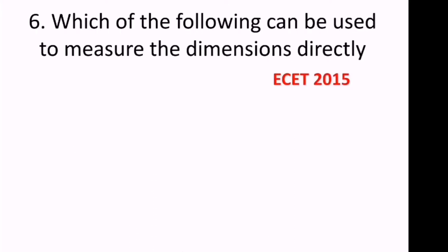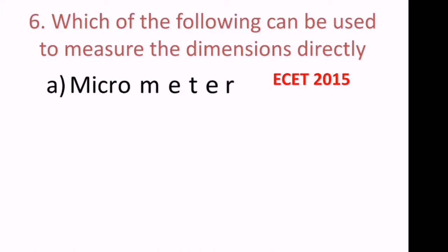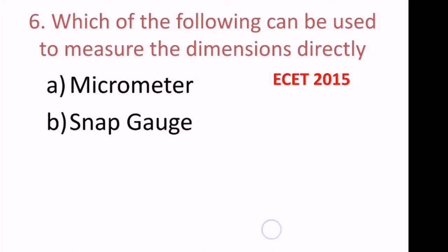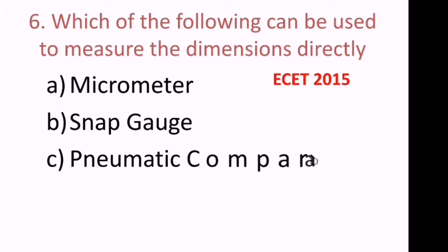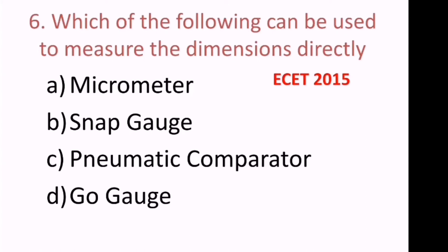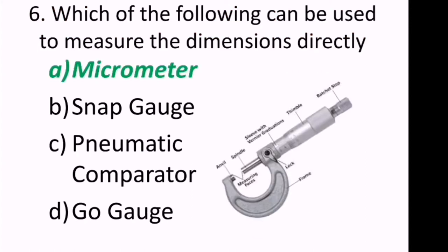Sixth question, which was asked in the 2015 ESET exam: Which of the following can be used to measure dimensions directly? The options are micrometer, snap gauge, pneumatic comparator, or go gauge. The micrometer measures dimensions directly — A is the correct answer.